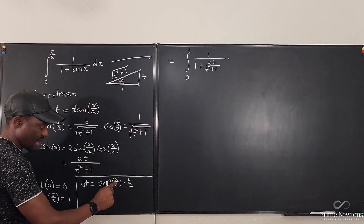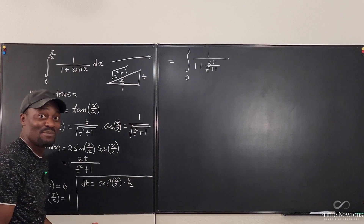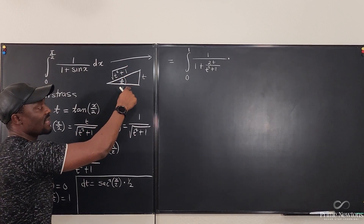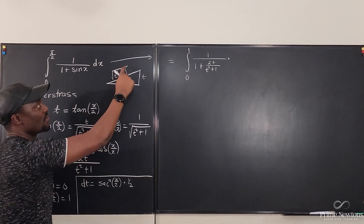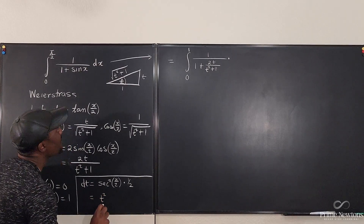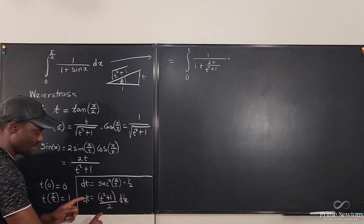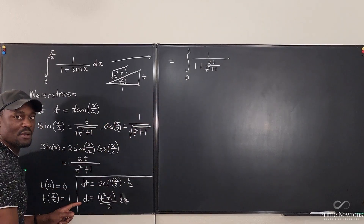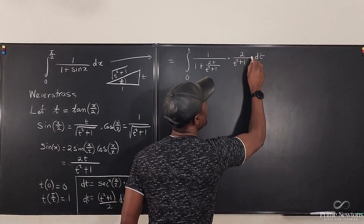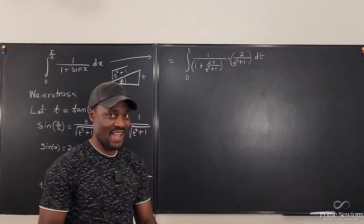What is secant squared of x/2? Going back to the triangle, the secant is hypotenuse over adjacent, which is root(t²+1) over 1, and when you square it, you get t squared plus 1. So isolating dx, we get dx = 2 dt over t squared plus 1. That's what we substitute in.